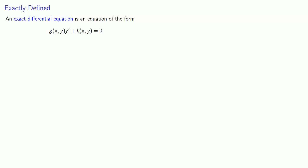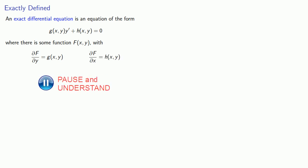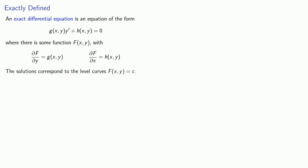And this leads to the following definition. An exact differential equation is an equation of the form g of x, y times y prime plus h of x, y equals 0, where there exists some function f of x, y such that the partial of f with respect to y is g, and the partial of f with respect to x is h. In that case, the solutions correspond to the level curves f of x, y equals a constant.